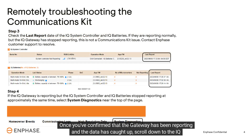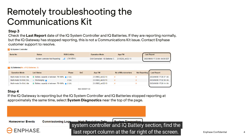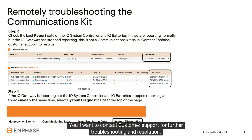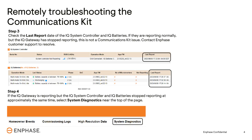Once you've confirmed that the gateway has been reporting and the data has caught up, scroll down to the IQ system controller and IQ battery section. Find the last report column at the far right of the screen. If the last report timestamp is reporting normally and up to date, this is not a communication kit issue. You'll want to contact customer support for further troubleshooting and resolution.